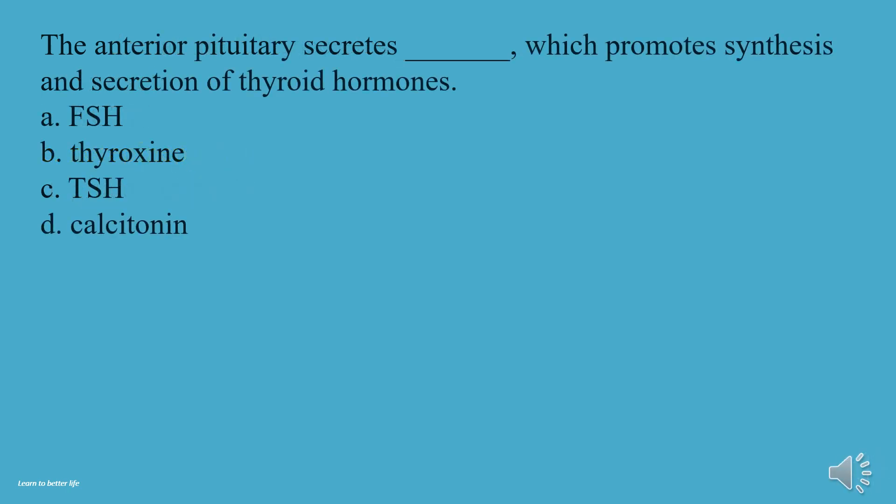The anterior pituitary secretes what, which promotes synthesis and secretion of thyroid hormones? A, FSH. B, Thyroxine. C, TSH. D, Calcitonin. The answer is C, TSH.